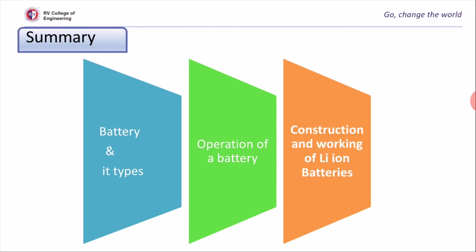Summary: In today's class, we learned what a battery is and its components, types of batteries, and the operation of a battery — applicable only for secondary batteries — involving charging and discharging. Finally, we learned the construction and working of lithium ion based batteries, specifically lithium cobalt oxide batteries.